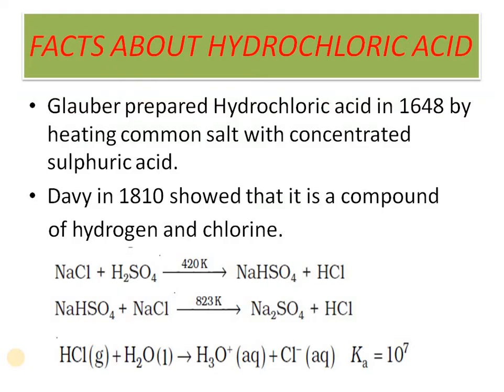Let us start with some facts about hydrochloric acid. Glauber prepared hydrochloric acid in 1648 by heating common salt with concentrated sulfuric acid — this is the first lab method of preparation of hydrogen chloride. Then afterward, Davy in 1810 showed that it is a compound of hydrogen and chlorine.